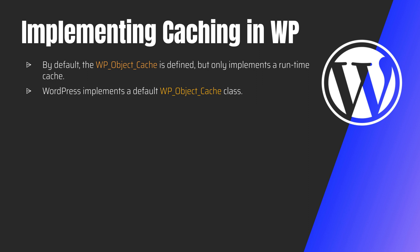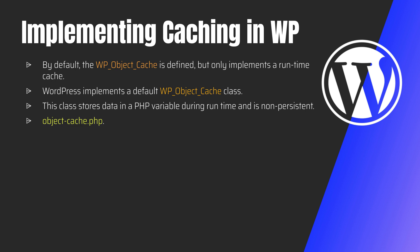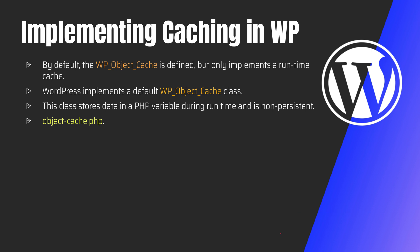This default class merely stores data in a PHP variable during runtime and is not persistent. However, it can be overridden by your plugins. To write your own caching strategy and define your own object cache, you must add a file to the wp-content directory named object-cache.php. If this file exists, it will be loaded instead of the default class. This file is also known as a WordPress drop-in.